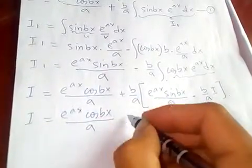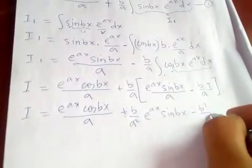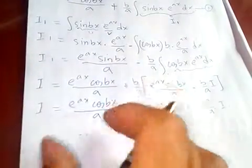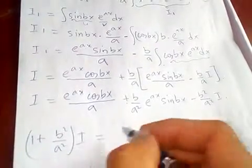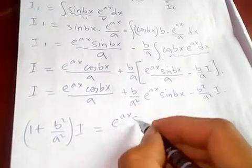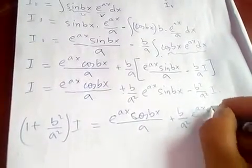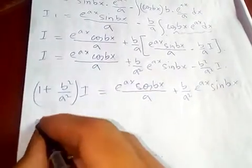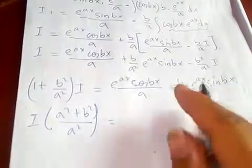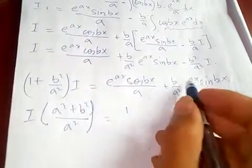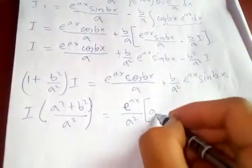Expanding the bracket: I equals e to the ax cos bx over a, plus b over a squared times e to the ax sin bx, minus b squared over a squared times I. Transferring the I term to the left side and factoring: one plus b squared over a squared times I, which simplifies to a squared plus b squared over a squared times I.